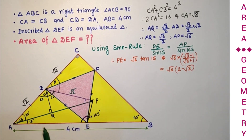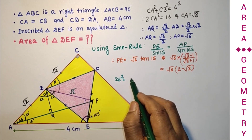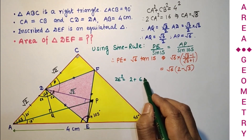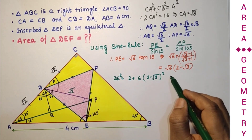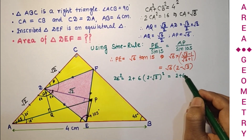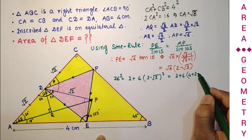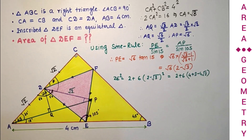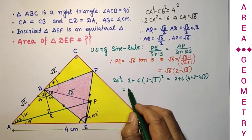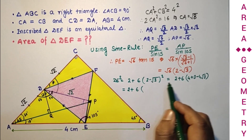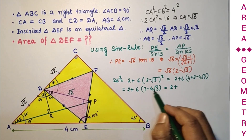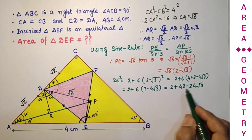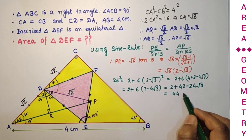By the Pythagorean theorem: DE² = DP² + PE² = 2 + [√6·(2−√3)]². Expanding: PE² = 6·(2−√3)² = 6·(4 + 3 − 4√3) = 6·(7 − 4√3) = 42 − 24√3. Therefore DE² = 2 + 42 − 24√3 = 44 − 24√3.